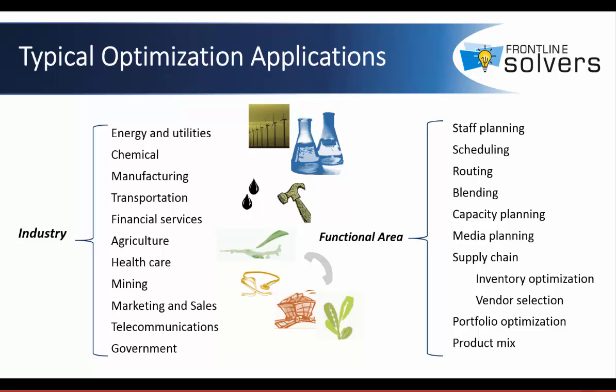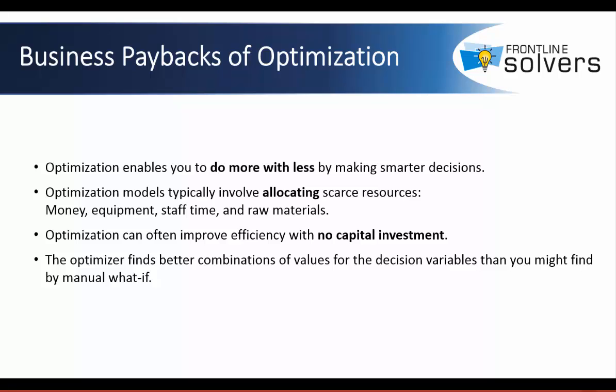These are just some of the typical examples. Optimization has a wide spectrum of applications and the number of industrial users and customers is exponentially increasing. Here are just some of the paybacks. It is always best and most powerful to efficiently allocate scarce resources arising in every business — money, equipment, staff time, or raw materials. These decision problems can benefit from optimization approaches to support and improve your managerial choices. Optimization enables you to do more with less by making smarter decisions, and it often improves efficiency with no capital investment. The optimizer finds better combinations of values for the decision variables than you might find by manual what-if analysis.